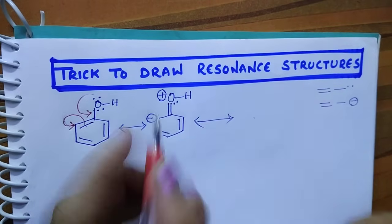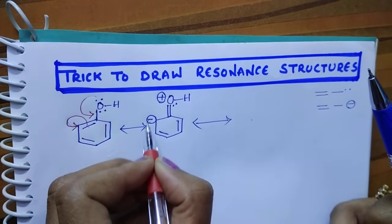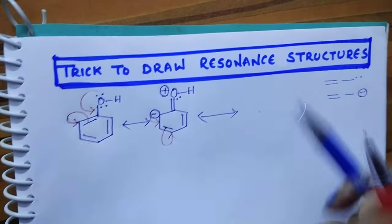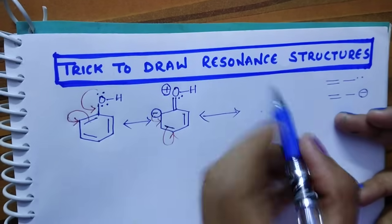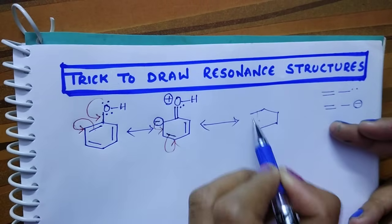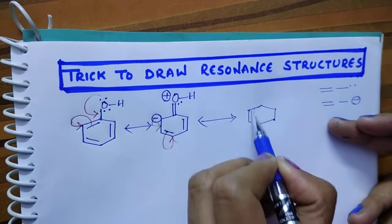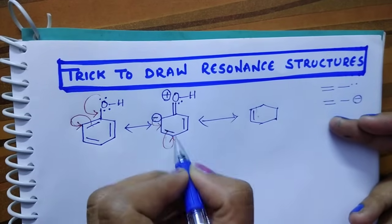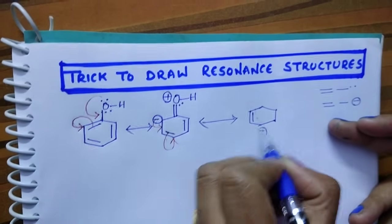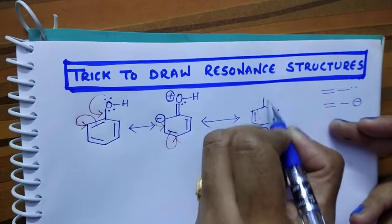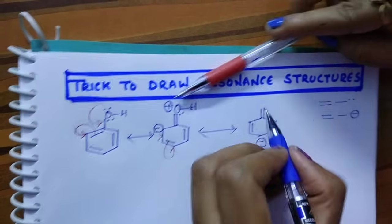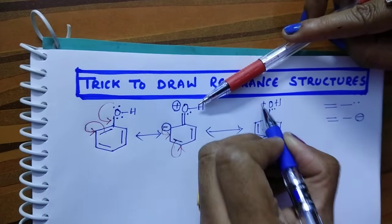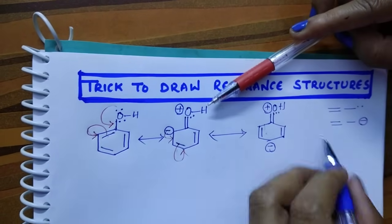Here what happens is this electron pair shifts here, this electron pair shifts here. When this shifts, we get a bond; when that shifts, a negative charge; and here the bond is as-is, and a double bond, O, H, lone pair, and one positive charge.